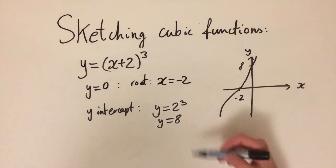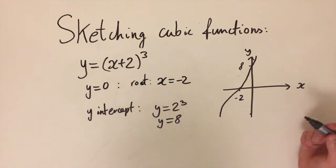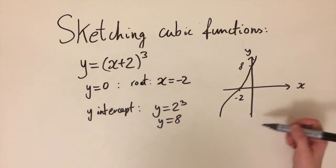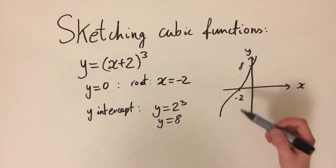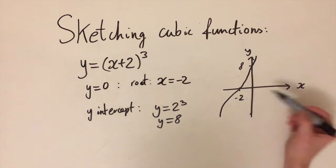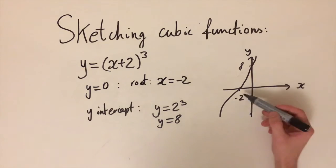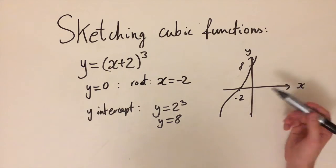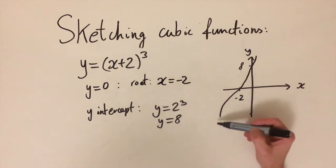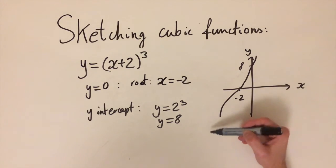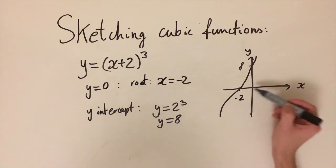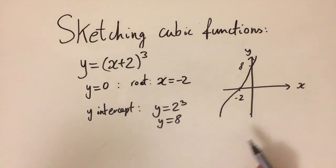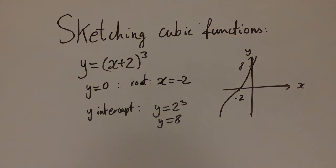That pretty much summarizes all the types of cubic functions you'll see. You'll get three roots, two roots, or one root. You'll always get at least one root because the curve has to start at opposite ends and cross the x-axis, and that covers all the different shapes you'll encounter.